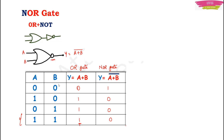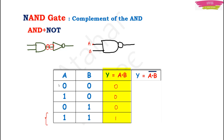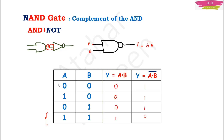Now let's talk about the NAND gate. You put the AND gate as input of the NOT gate, so the AND gate output becomes complement. You call it the NAND gate because it is the complement of AND gate. For the symbol, you take one circle from the NOT gate and put it on the AND gate. The output is the complement of A·B. For AND gate, outputs are 0, 0, 0, 1; for NAND gate, the opposite: 1, 1, 1, 0. Remember — NAND gate output becomes 0 only when both inputs are 1.